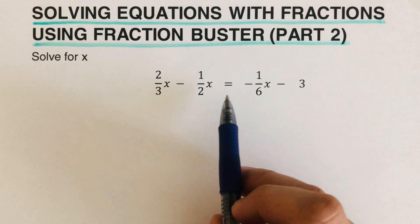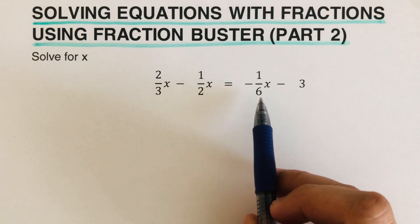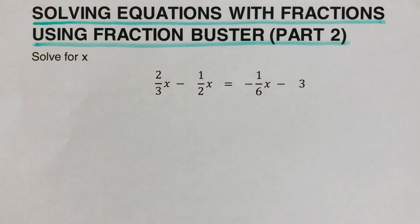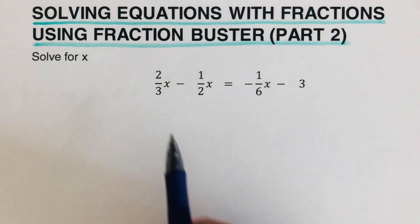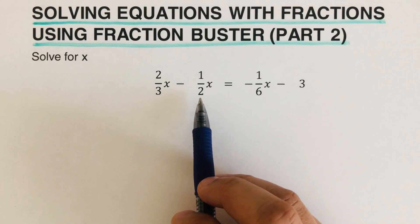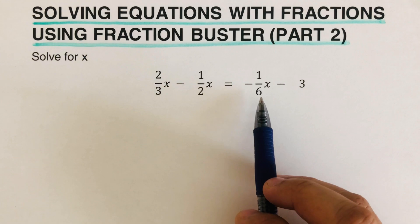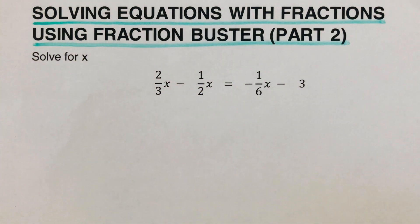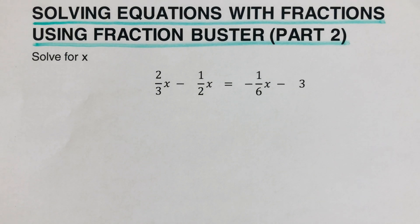Let's take this first example: we have 2/3 x minus 1/2 x equals negative 1/6 x minus 3. The first step is to determine the LCM, or least common multiple. We need to find a number such that dividing it by 3, 2, and 6 each gives a whole number. That number is 12, because 12 works for 3, 2, and 6 — so 12 is our LCM.